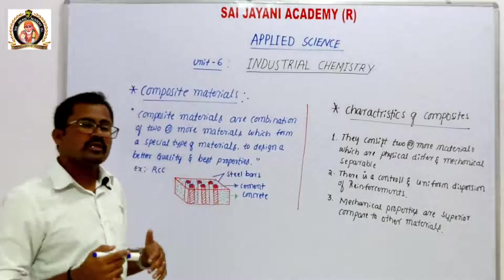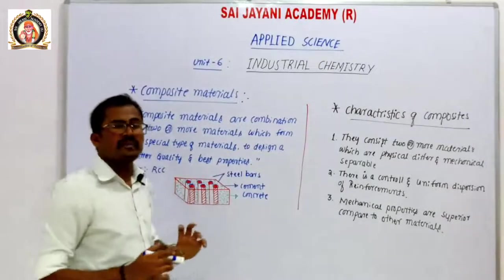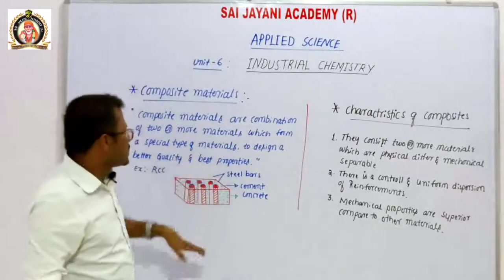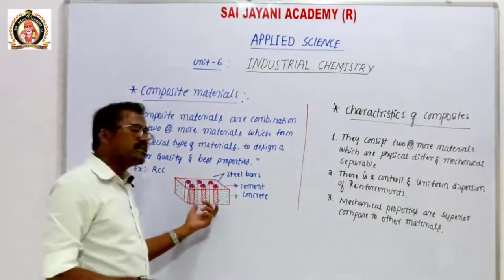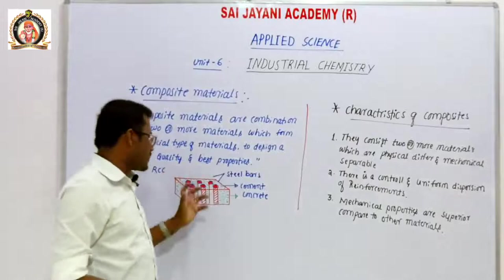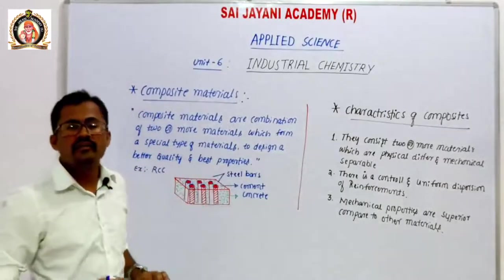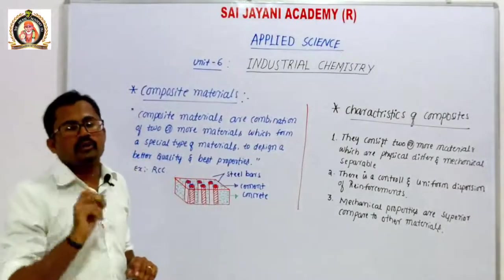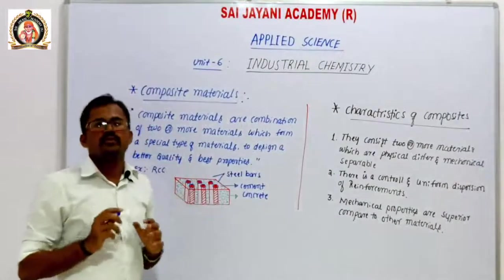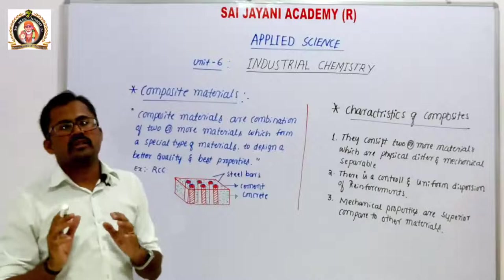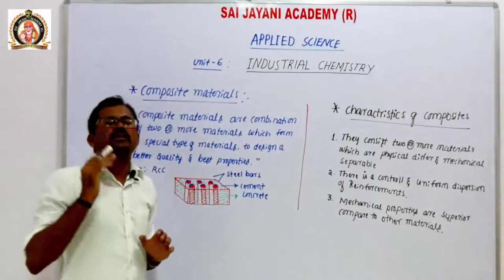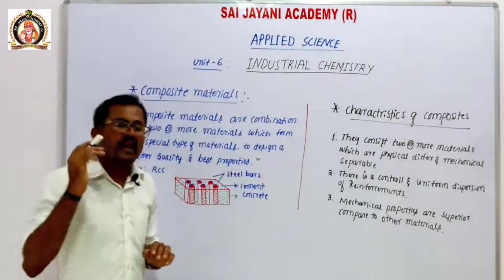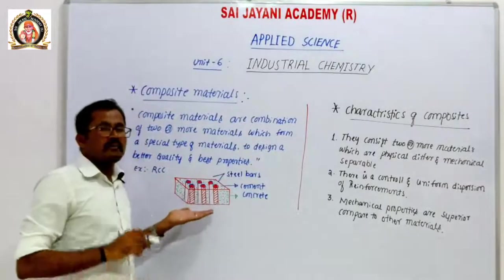This combination results in high strength with low material cost. The cement block with steel rod inserted is a combination of high strength but low weight. High strength with low weight is a special characteristic of composite material. Composite materials have very high strength but lower weight — so weight can be reduced without losing strength.